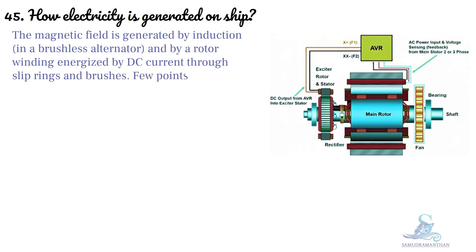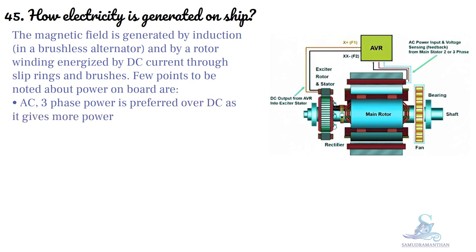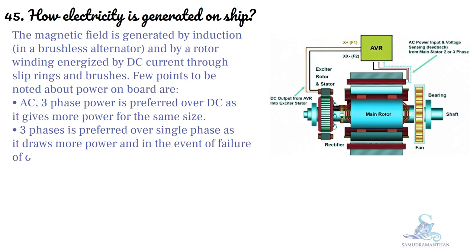A few points to be noted about power on board: AC 3-phase power is preferred over DC as it gives more power for the same size. Three phases are preferred over single phase as they draw more power, and in the event of failure of one phase, the other two can still work.